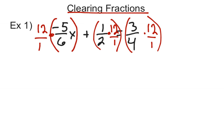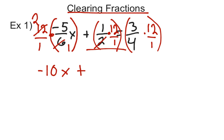If I start with the first term, the negative 5 sixths, when multiplying fractions the 12 and the 6 end up being reduced — they become 2 and 1. Finishing that multiplication on top, I have 2 times negative 5, which is negative 10. On bottom, 1 times 1 is 1, so that just goes away. It clears the fraction and leaves me with negative 10x. For the middle term, 1 half times 12 over 1: the 2 and the 12 reduce to 1 and 6, giving me 6. The 4 and the 12 become 1 and 3, giving me 9. By clearing the fractions, I end up with the equation negative 10x plus 6 equals 9.